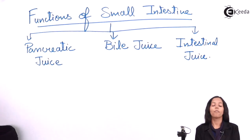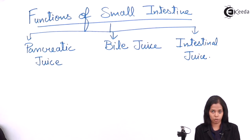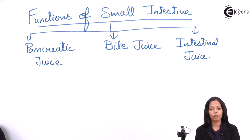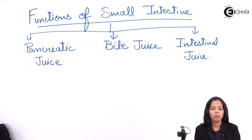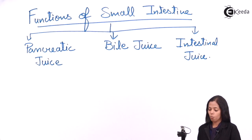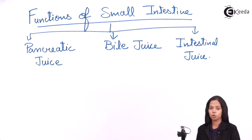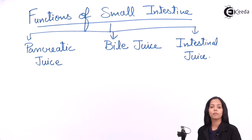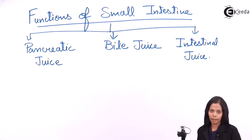Now let's see what are the functions of each juice. Speaking about pancreatic juice, pancreatic juice cannot get activated without bile juice, so we'll study bile juice first. What is the speciality of bile juice? In the stomach the medium required was acidic, but for the small intestine the medium required is alkaline.